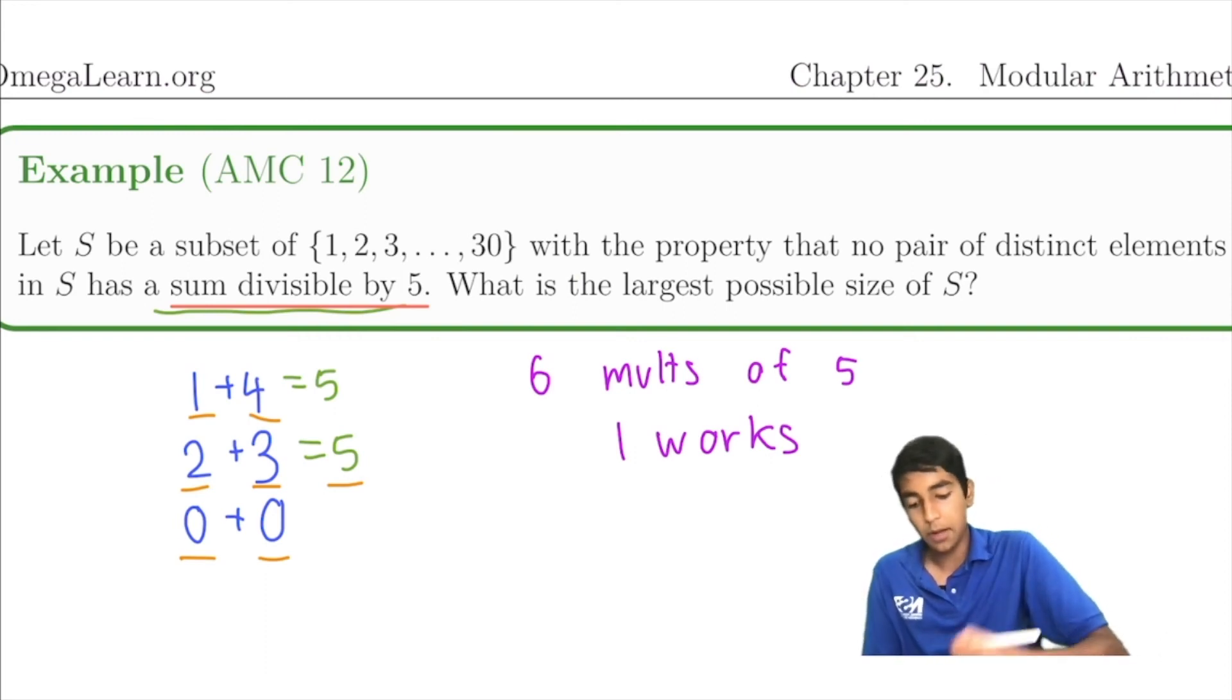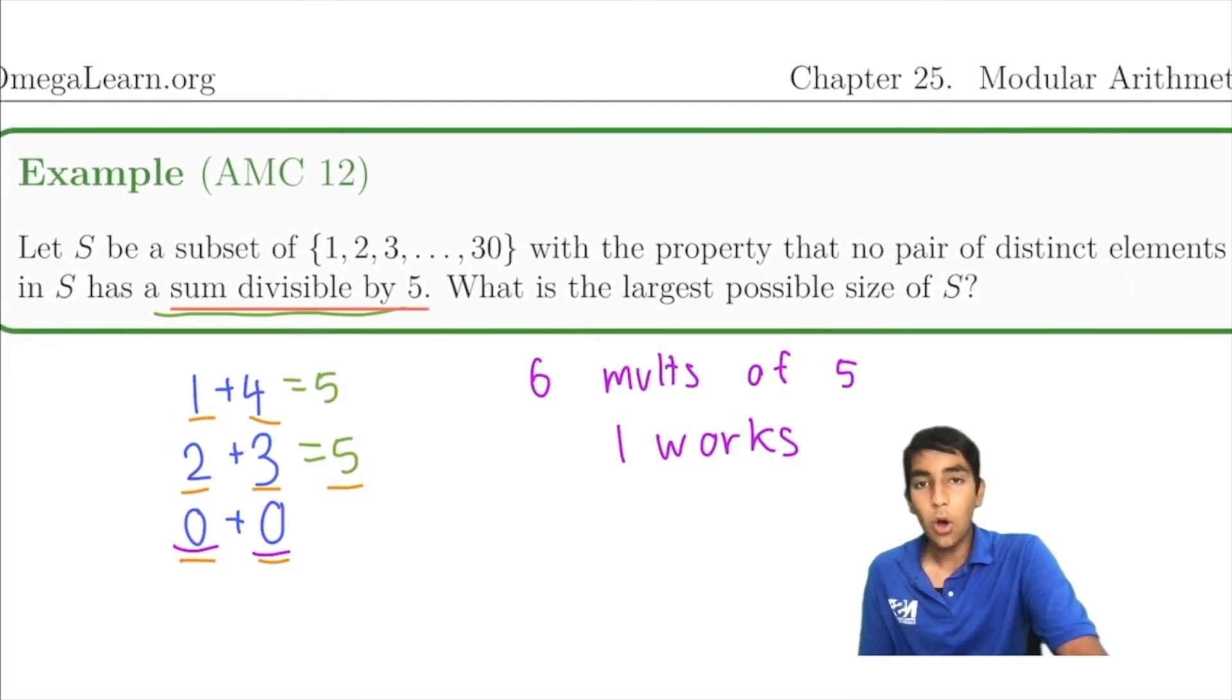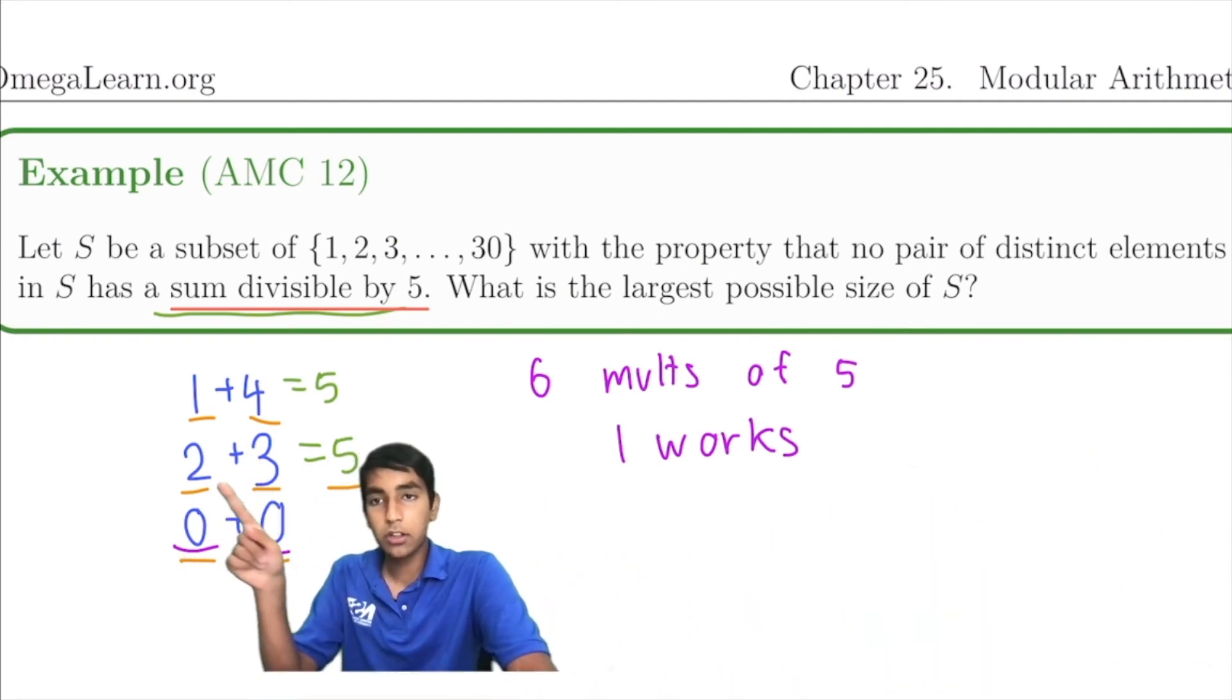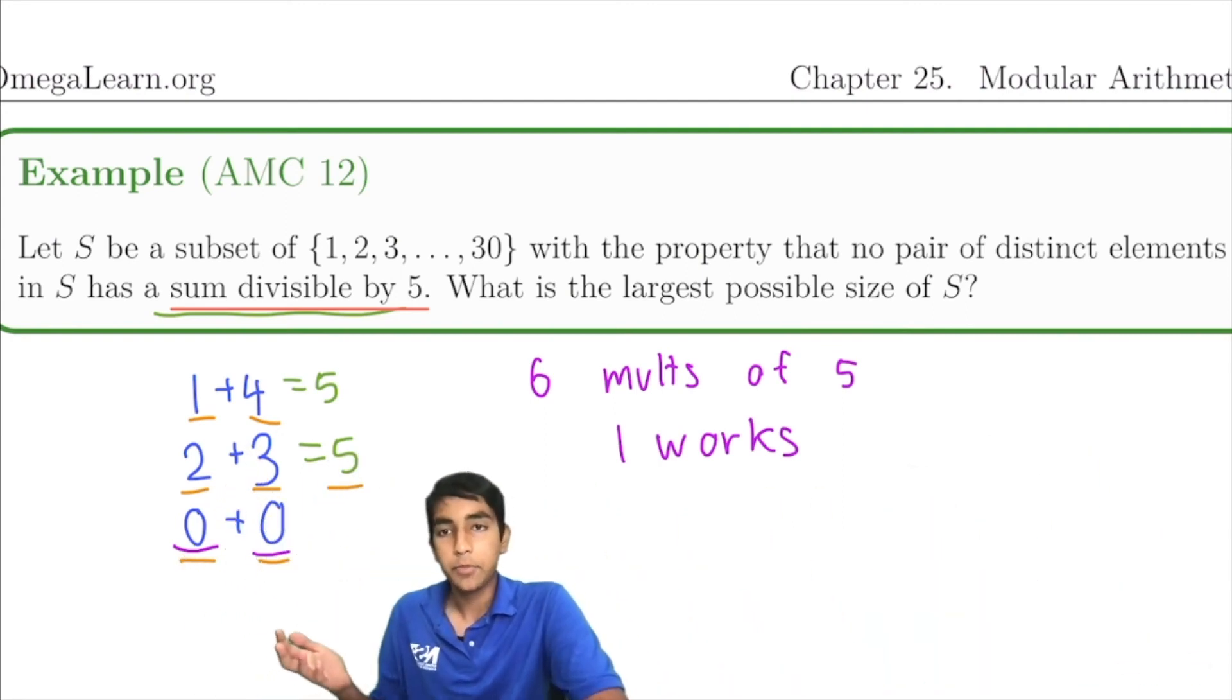So now we know that only 1 of them can be part of our subset. But what about for these 1s and 4s and 2s and 3s? What do we do about them?